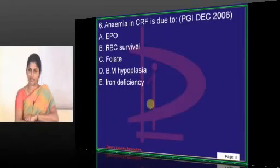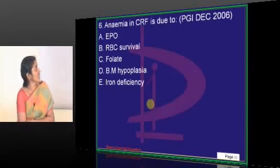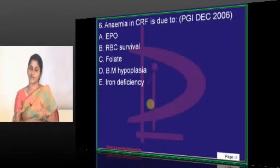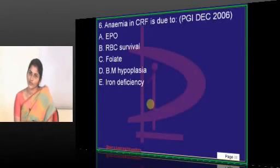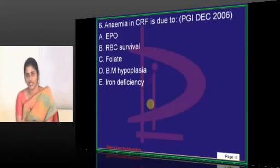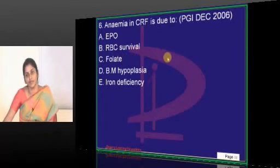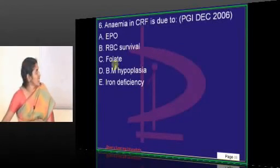Anemia in chronic renal failure is due to multiple mechanisms. You know that chronic renal failure patients becoming anemic is a very common finding. One common mechanism is that the kidneys are the site of production of erythropoietin — a growth factor for red cells — and this is the most common, well-understood mechanism. Additionally, will there be any reduction in red cell survival? Yes — mechanical factors and other things result in reduced red cell survival.